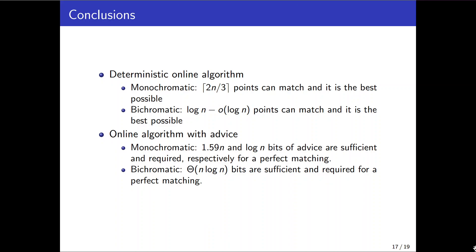Under the advice setting in monochromatic case 1.59n bits of advice are sufficient while log n bits are required for perfect matching which there is a gap between the upper bound and lower bound here. And in bichromatic case meanwhile theta n log n bits of advice is both sufficient and necessary for perfect matching.